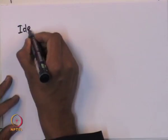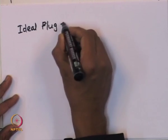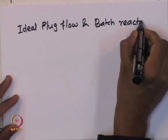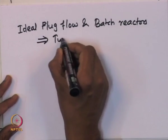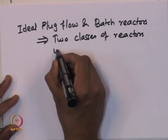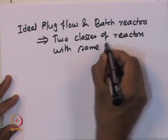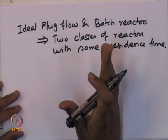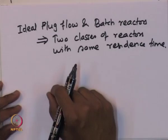There are only two classes of ideal reactors in which the residence time can actually be the same for all molecules: the ideal plug flow and the ideal batch reactor. All other reactors will have a distribution of residence time, including CSTR.